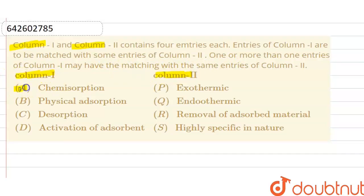Here column A is chemisorption. First of all, we have to discuss about chemisorption. We know that chemisorption is a kind of adsorption which involves a chemical reaction between the surface and the adsorbate.